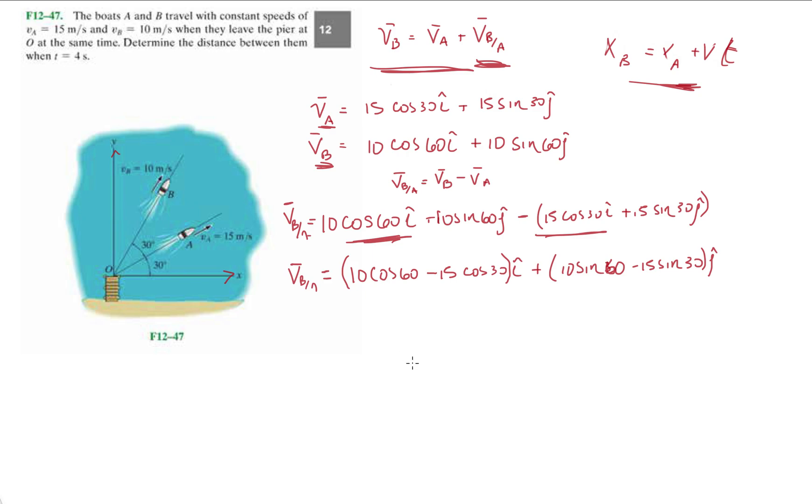10 cosine 60 minus 15 cosine 30, that's the i term, plus our j terms: 10 sine 60 minus 15 sine 30 j. So this becomes minus 7.99 i plus 1.16 j. That's the velocity of B with respect to A.